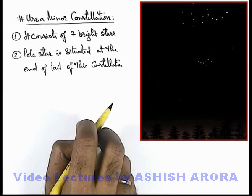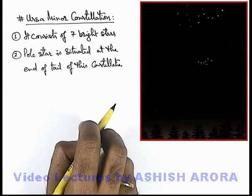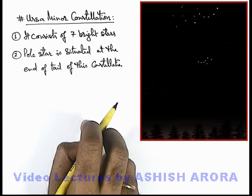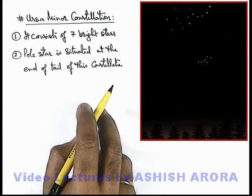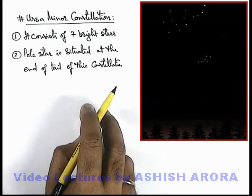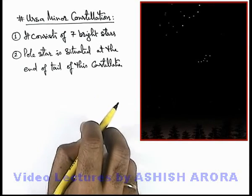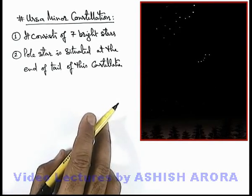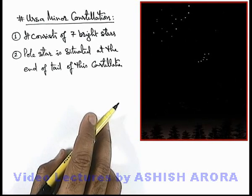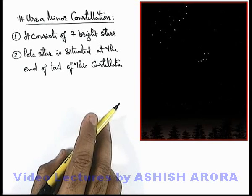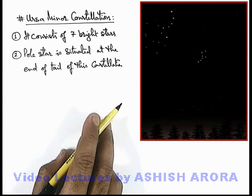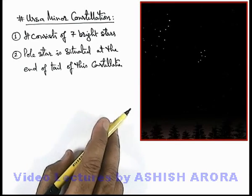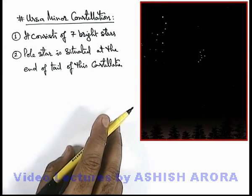Because as we already studied in the previous topic, as seen from Earth, the pole star always appears at rest and all other stars appear to revolve around the pole star. Due to this, if the pole star is located, it always appears at rest, and the other stars — including the 6 bright stars of Ursa Minor constellation — appear to move in its surrounding.